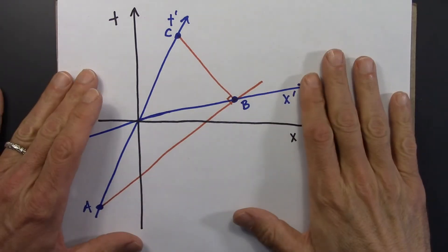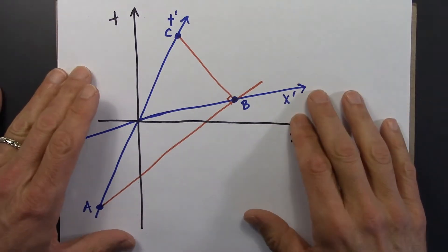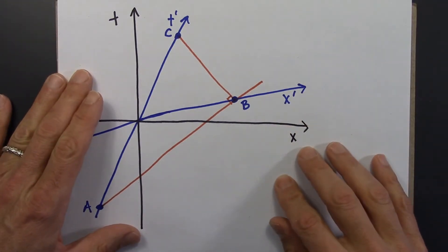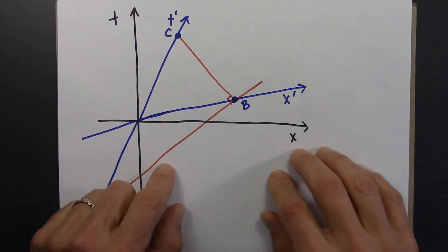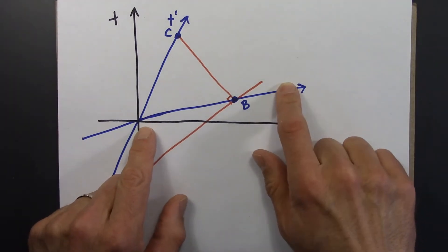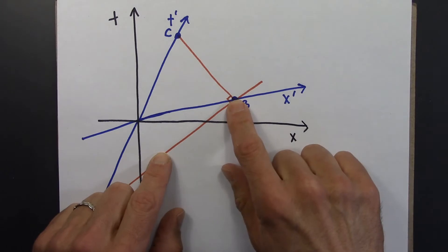In the last video, we constructed this picture, this two-observer space-time diagram. And we saw that the x' axis is actually above the x-axis.